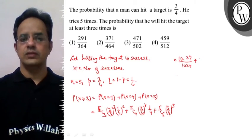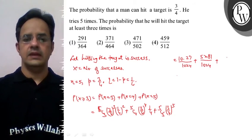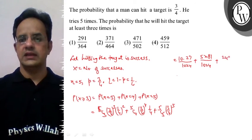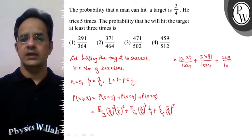5C4 is 5 and it is multiplied with 81/1024. And 5C5 is 1, and (3/4)⁵ is 243/1024.